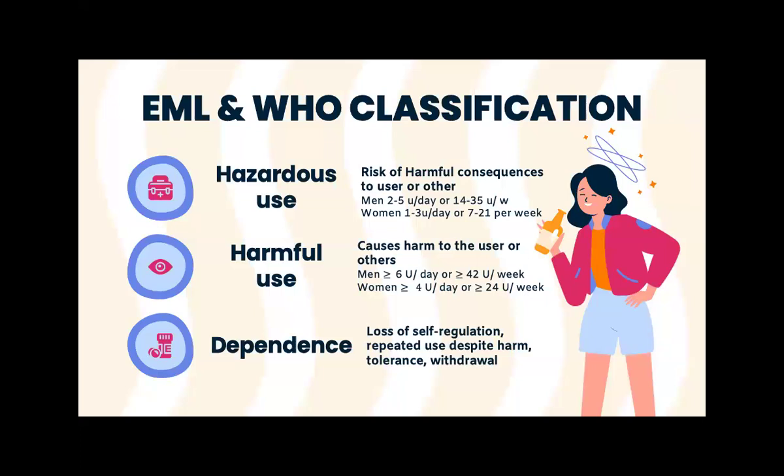The next level is harmful use — using too much, and again the actual levels matter less than the effect on your life. When it starts to have a negative effect, whether physical, social, or at work, and you're continuing to drink anyway, that is called harmful use. Dependence has all those criteria of being physically addicted to the substance — if you don't have it, you'll go into withdrawal, and you adopt various behaviors to maintain access to the substance. When doing CAGE questionnaires and classifying patients, it's very important to make clear what your classification is, because it will influence how we manage these patients.